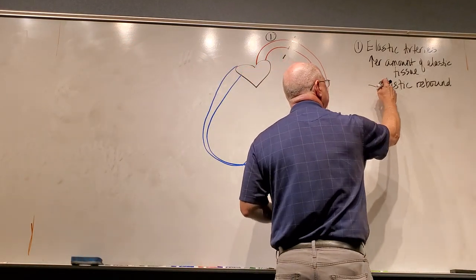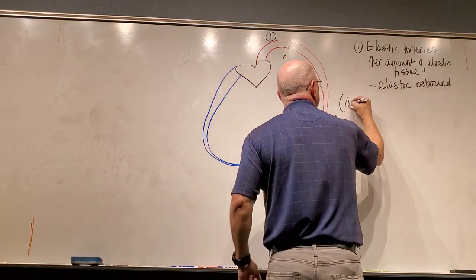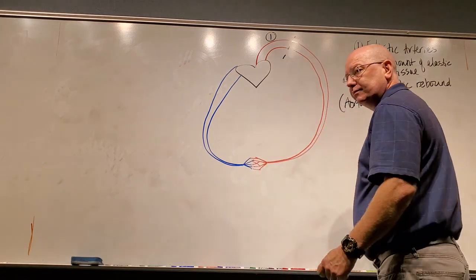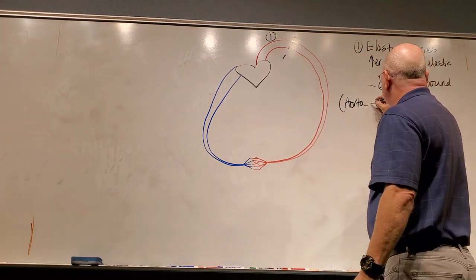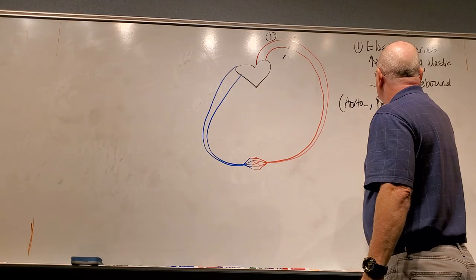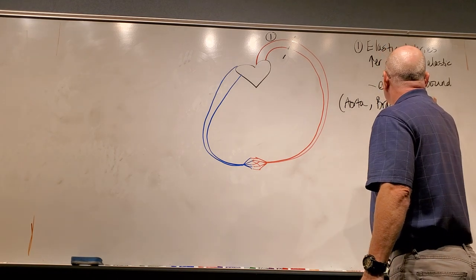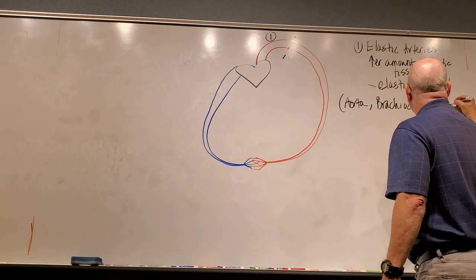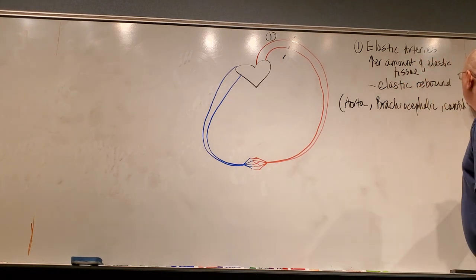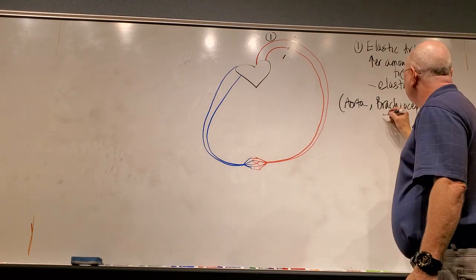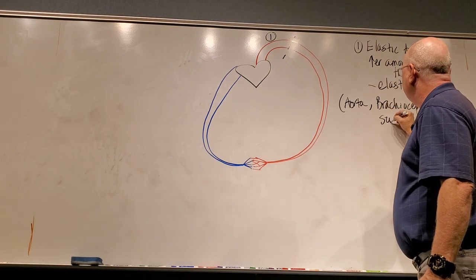Some examples of these vessels would include the aorta, at least really close to the heart, the brachiocephalic, the carotids, particularly the common carotids, and even part of the subclavians.